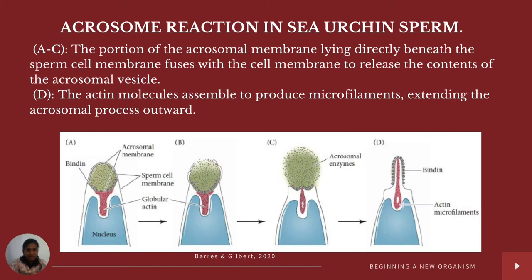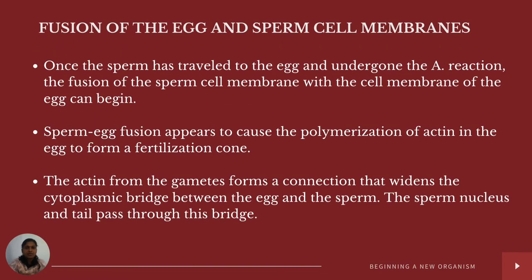Actin molecules then assemble to produce microfilaments extending along the acrosomal process outward. Once the sperm has traveled to the egg and undergone the acrosome reaction, fusion of the sperm cell membrane with the egg cell membrane begins. Sperm-egg fusion appears to cause polymerization of actin in the egg to form a fertilization cone, and the actin from the gametes forms a connection that widens the cytoplasmic bridge between egg and sperm, through which the sperm nucleus and tail can pass.